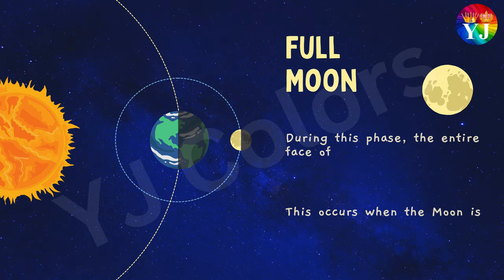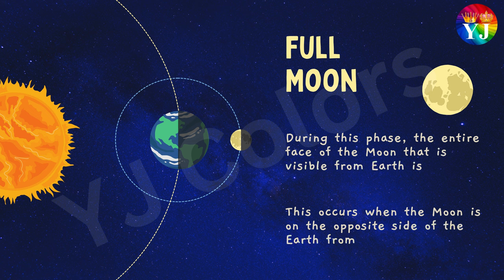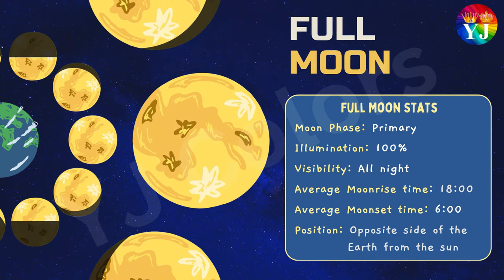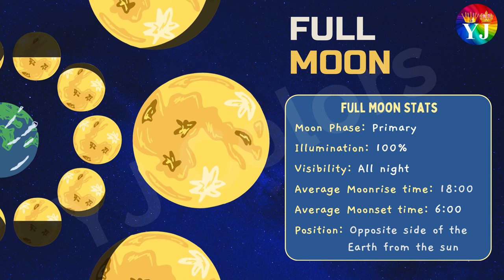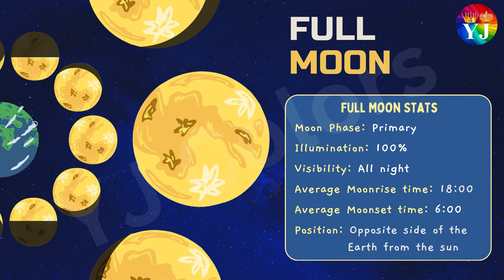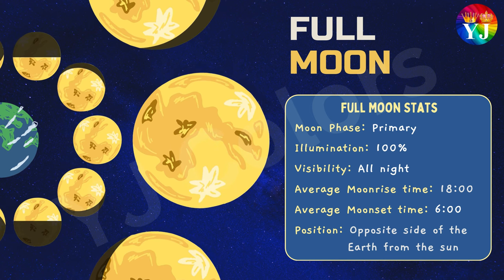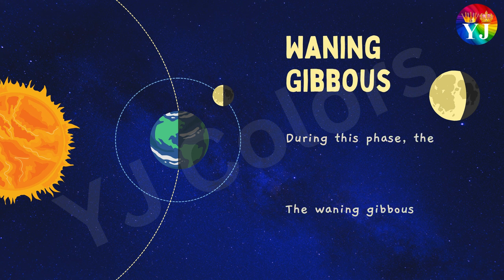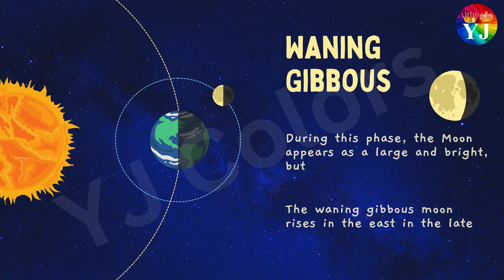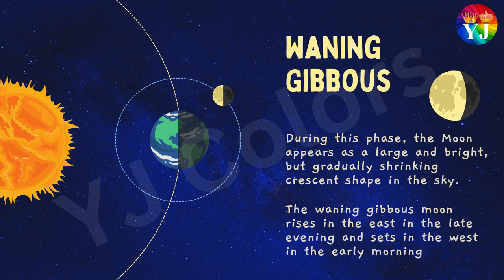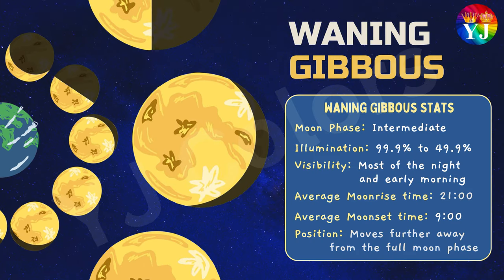Full Moon: During this phase, the entire face of the Moon that is visible from Earth is fully illuminated. This occurs when the Moon is on the opposite side of the Earth from the Sun. Statistics: Moon Phase — Primary; Illumination — 100%; Visibility — all night.